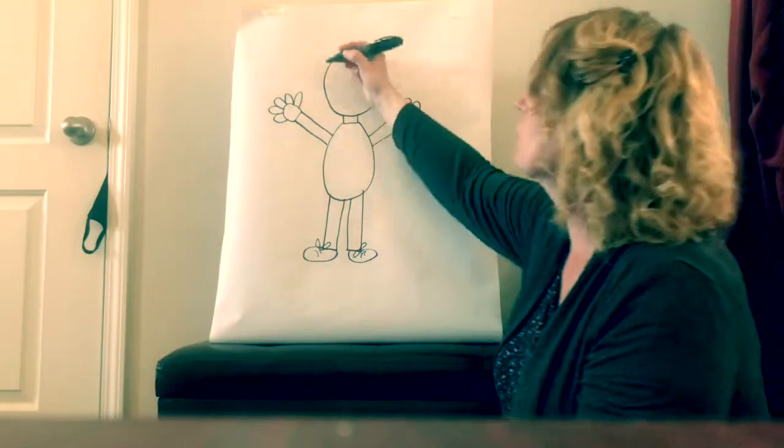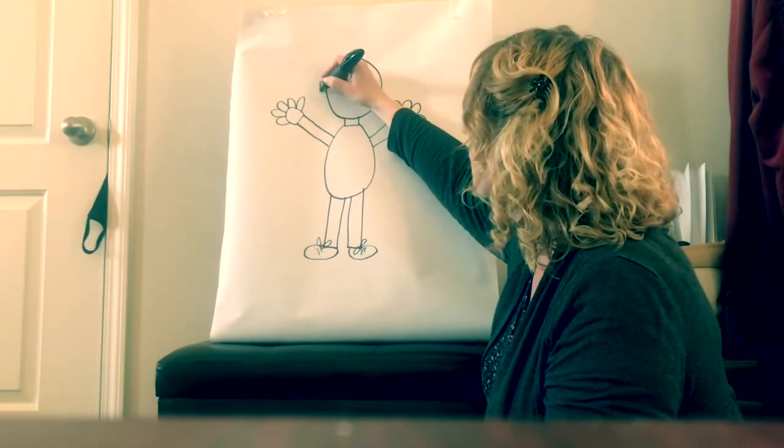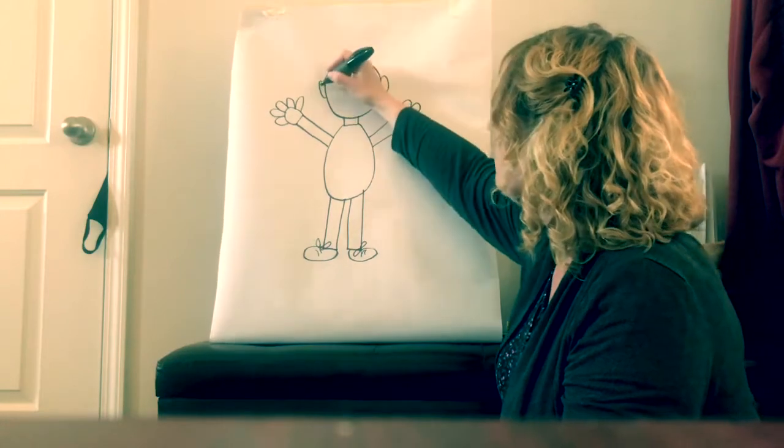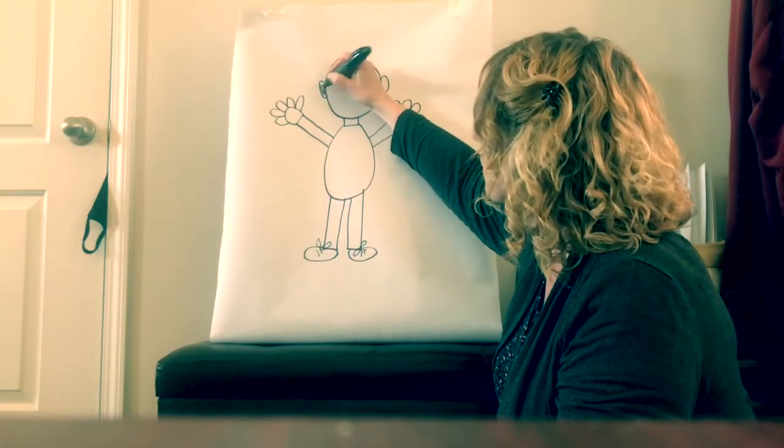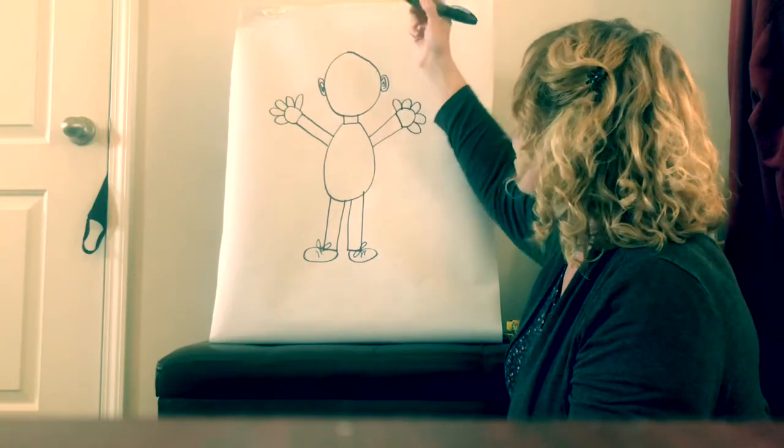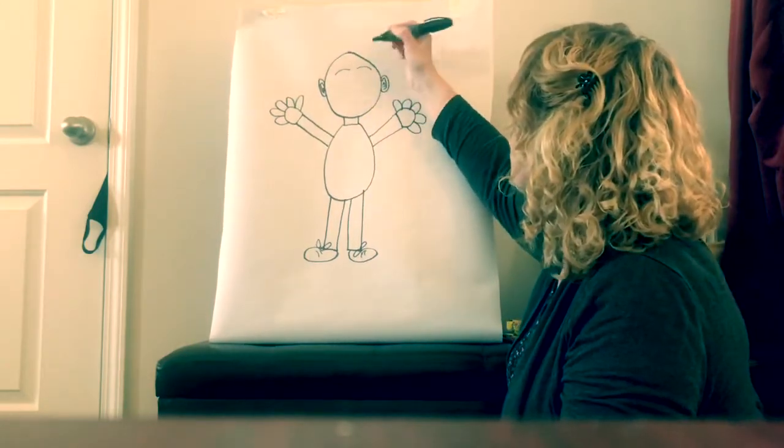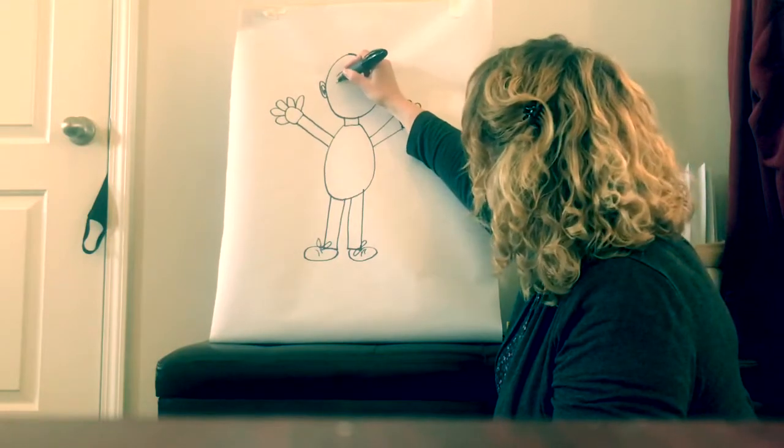So now I need some ears for Philip. Give Philip some ears. And then we're going to put some lines in his ears. And then he needs some eyebrows. And some eyes.